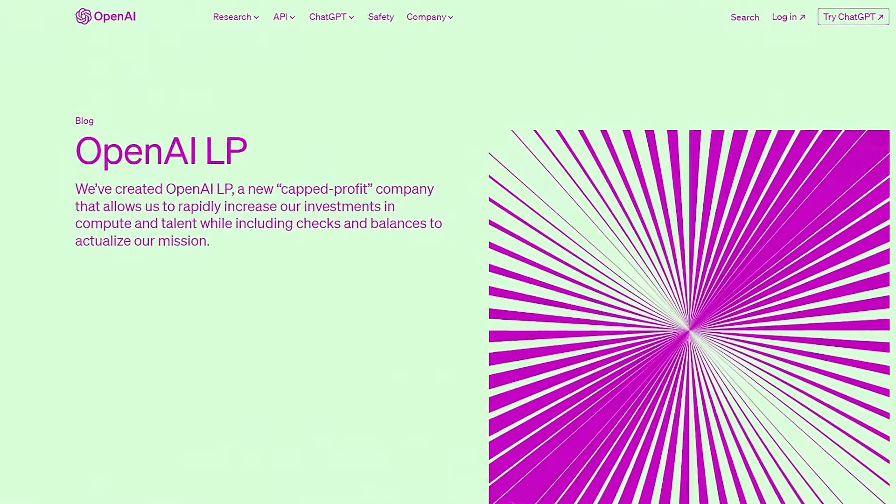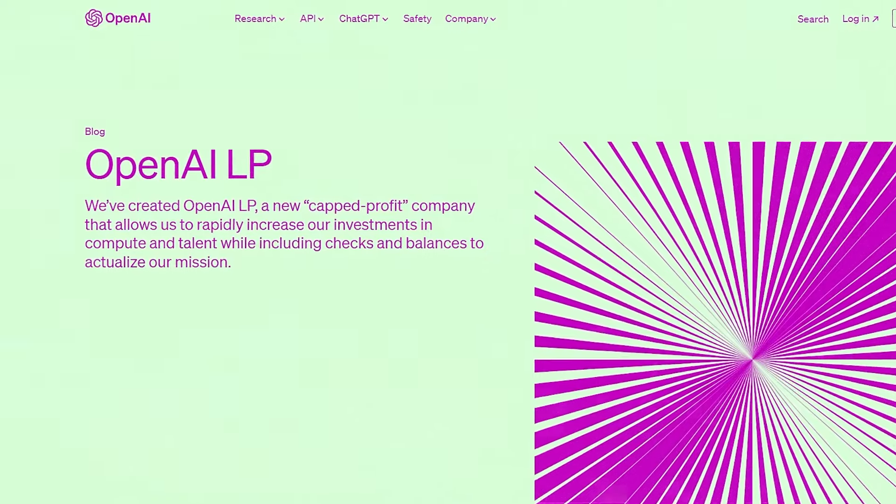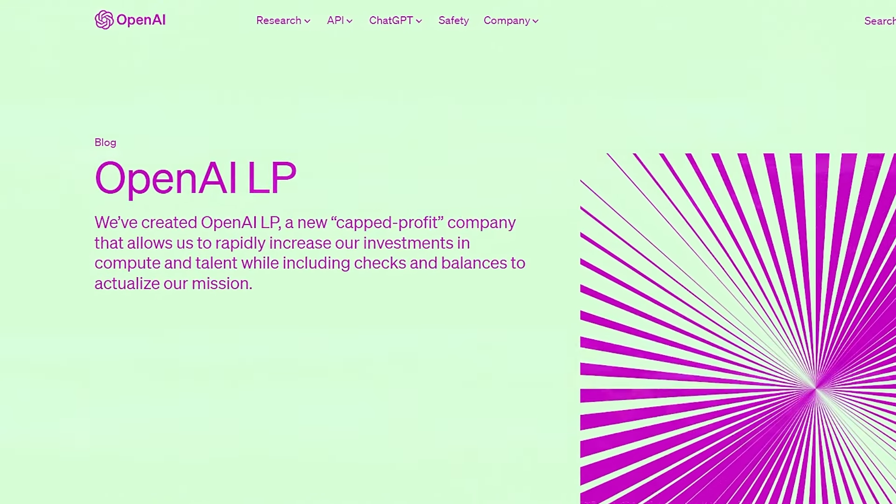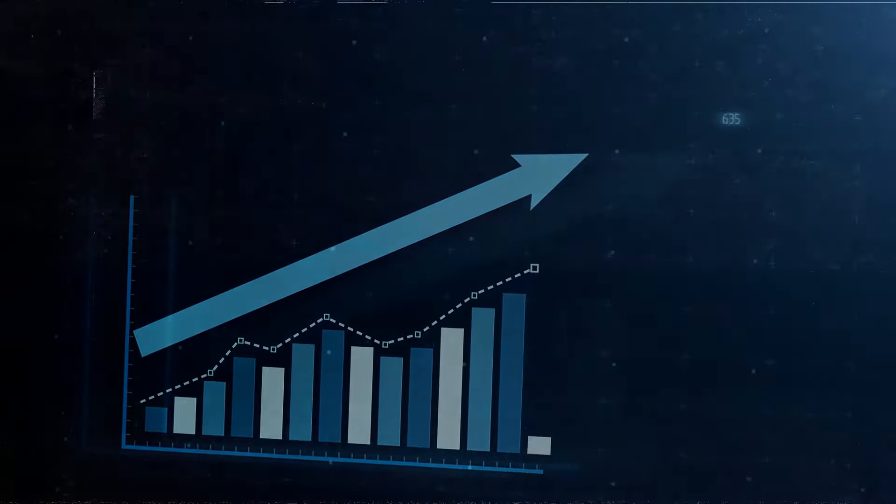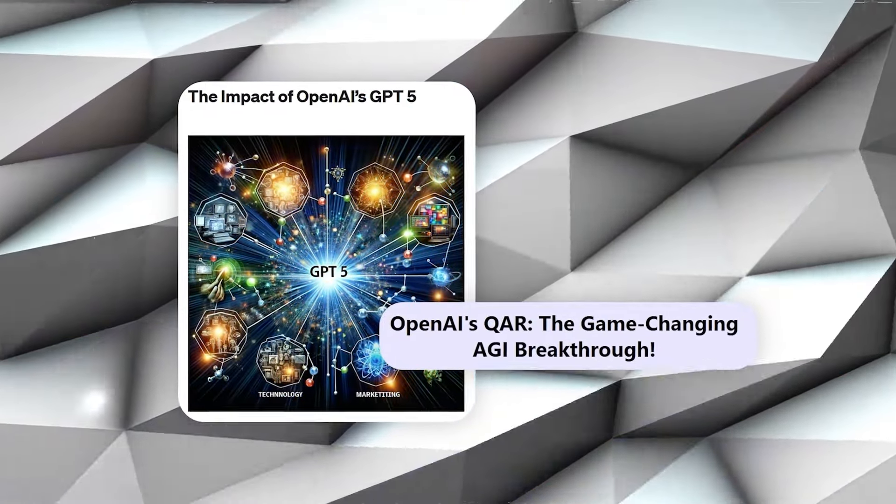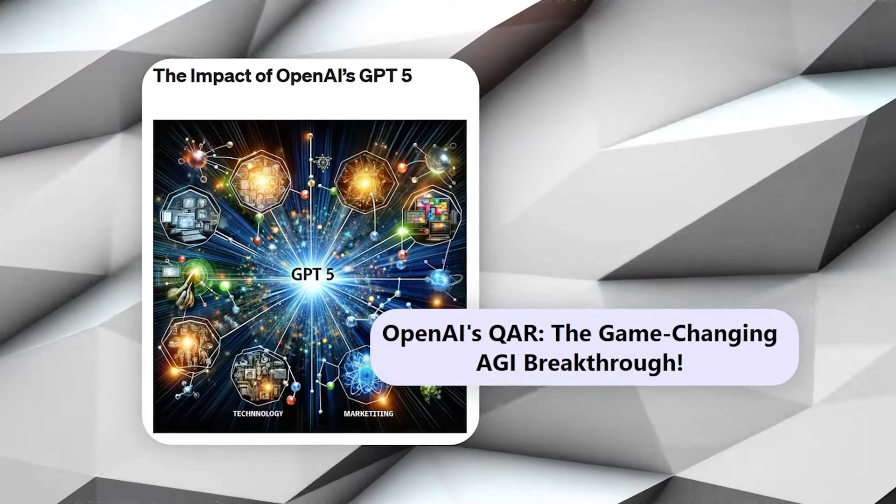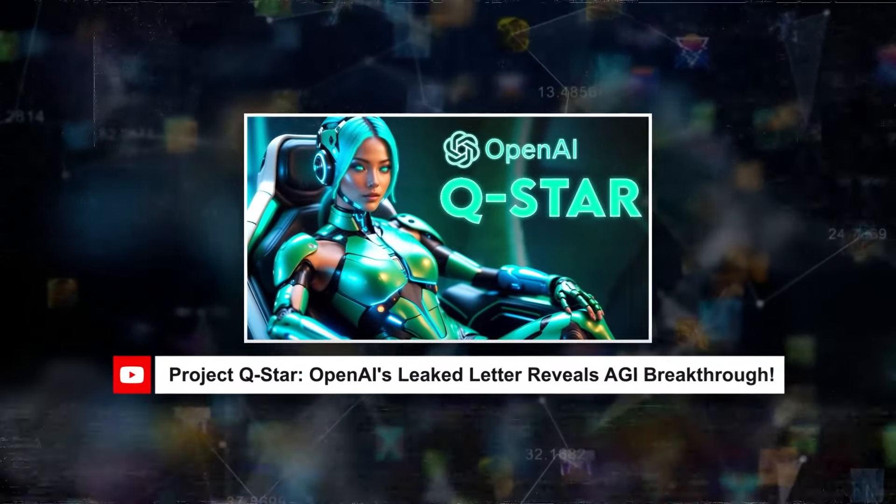OpenAI's pivot to a capped profit model and its increasingly close ties with Microsoft have raised quite a few eyebrows. The essence of the concern here is not just about the profit motive. It's about accessibility and transparency. GPT-5, and potentially QAR, represent monumental leaps forward in AI capabilities. But the details of these advancements are shrouded in secrecy.